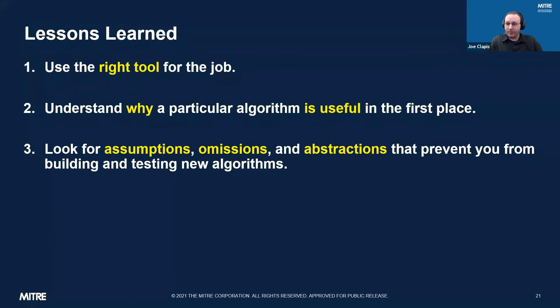Number three: when you find a paper or an algorithm, look for assumptions, omissions, and abstractions that prevent you from building and testing it. There are a lot of papers out there that claim to do truly miraculous things with quantum computers, and you need to check them for any assumptions they make, any omissions they left out, or any abstractions that prevent practical application. These are often really hard to find — sometimes only mentioned in a footnote or in little blurbs in the conclusions — but they can make or break an algorithm's actual usage. You have to be very careful to understand exactly what a paper thinks you have available on hand, because you might not.